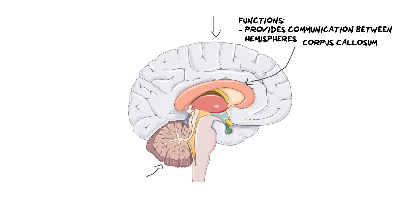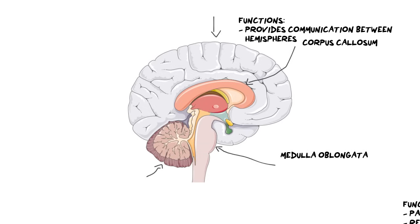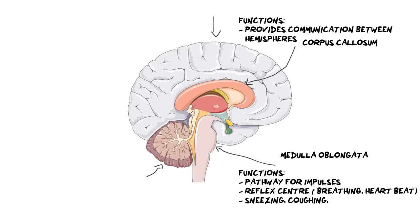Moving into the lower region of your brain, we reach what we call the medulla — the medulla oblongata. This is a swollen region at the bottom, and it has a really important function because this is where life is actually sustained in your brain. Its functions include being a pathway for impulses from your whole body, a reflex center for breathing and heart rate, as well as less critical reflexes like sneezing and coughing. If your medulla is damaged, it can often lead to death. It is often referred to as part of the brain stem.